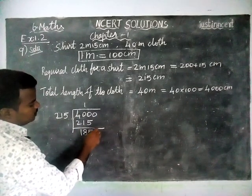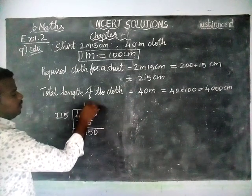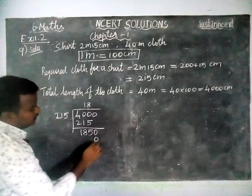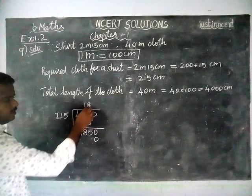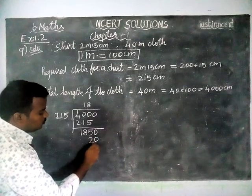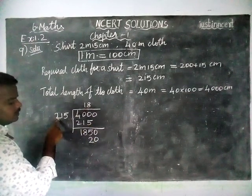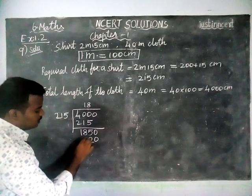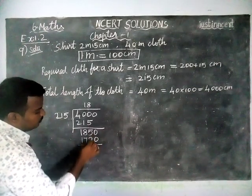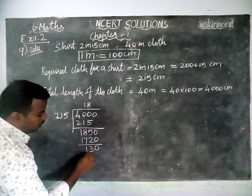Now, we are checking by 8. 8 fives are 40. Remaining 4 is there. 8 ones are 8. 8 plus 4 is equal to 12. Remaining 1 is there. 8 twos are 16. 16 plus 1 is equal to 17. The remaining is 0. 5 minus 2 is equal to 3. 8 minus 7 is equal to 1. So the quotient is 18.